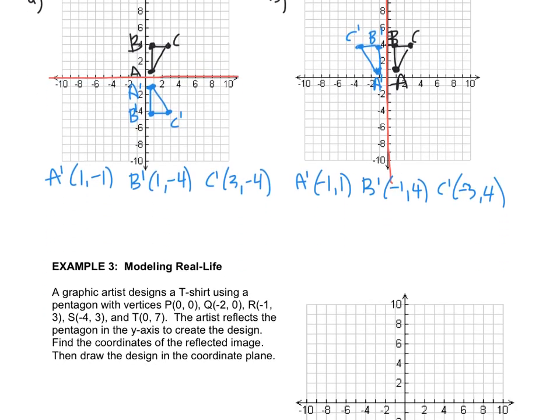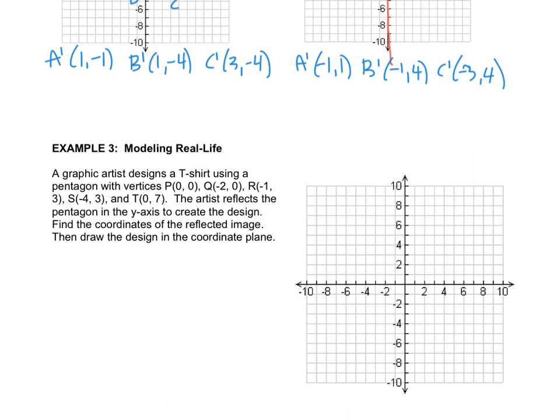Let's look at a little more involved problem, modeling real life. A graphic artist designs a t-shirt using a pentagon with these vertices. The artist reflects the pentagon in the y-axis, find the coordinates of the reflected image, then draw the design in a coordinate plane. A lot of graphics actually are reflections or translations or rotations, which is our upcoming lesson, or dilations, which is another upcoming lesson. A lot of these cool images that you see on t-shirts and water bottles and other places are actually transformations of a figure.